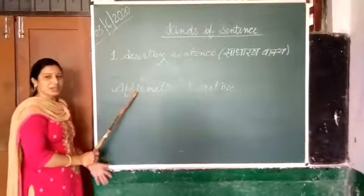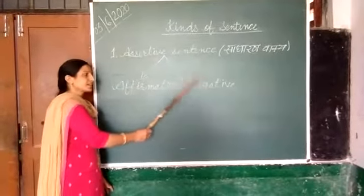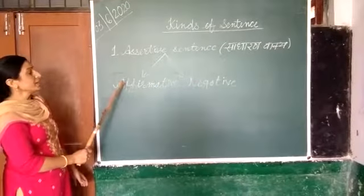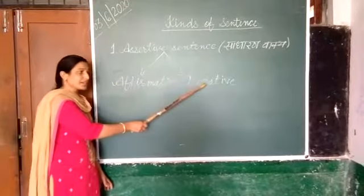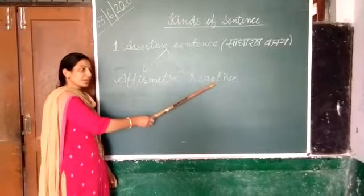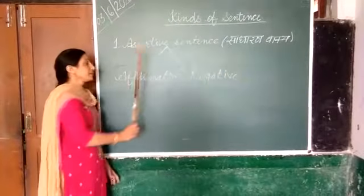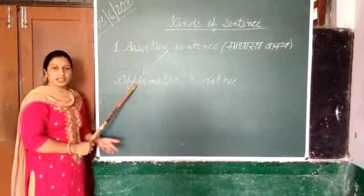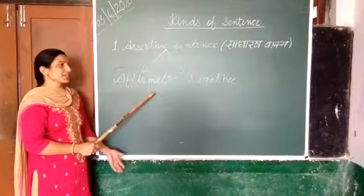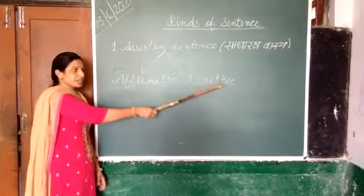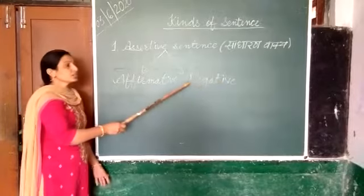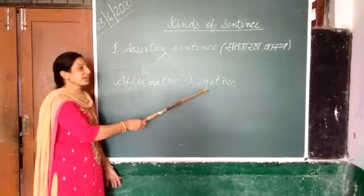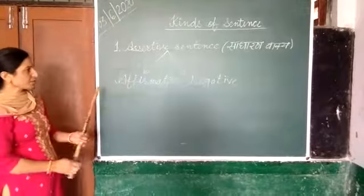Negative Sentence को Hindi में बोलेगे नकारात्म Vaakkyo. Assertive Sentence में जो कोई बात कहीं जा रही है वो सिंपल तरीके से कहीं जा रही है, और Negative Sentence में जो बात कहीं जा रही है उसमें इन्हार किया जा रहा है. तो मैं आपको एक-एक example दोगी.